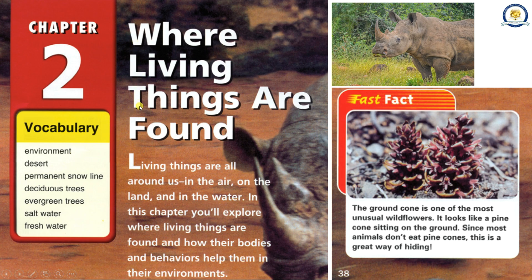Where living things are found. Living things are all around us — in the air, on the land, and in the water. In this chapter you'll explore where living things are found and how their bodies and behaviors help them in their environments. The ground cone is one of the most unusual wildflowers. It looks like a pine cone sitting on the ground. Since most animals don't eat pine cones, this is a great way of hiding.